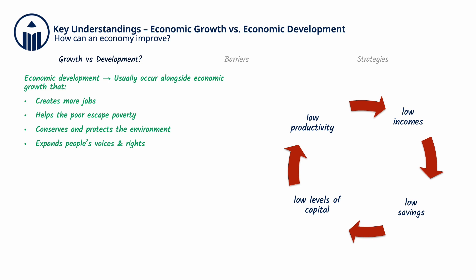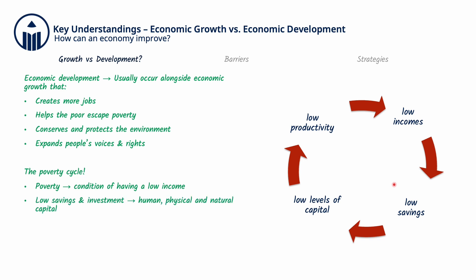A good diagram to illustrate economic development is the poverty cycle. Poverty is the condition of having a low income, which then leads to low savings and investment in all forms of capital – human capital, physical capital, and natural capital. Low levels of capital then translate to low levels of productivity, which leads to low incomes, trapping the poor in the condition of poverty and continuing the cycle.